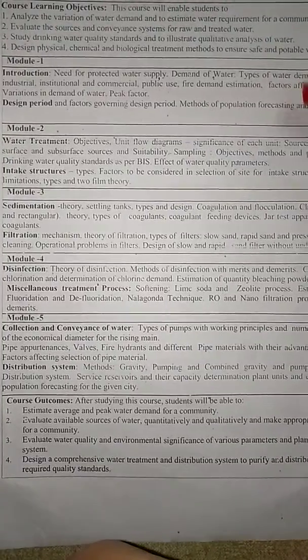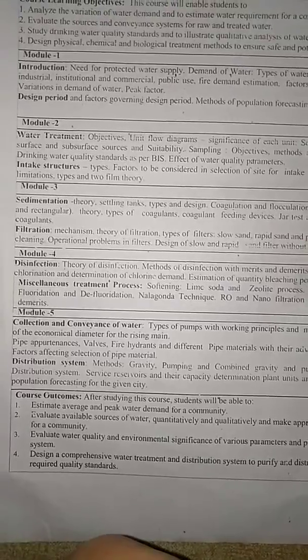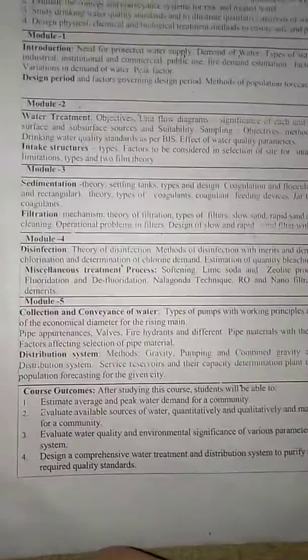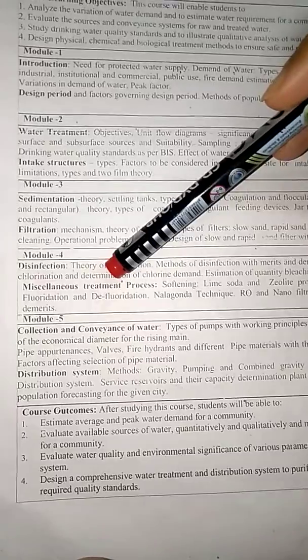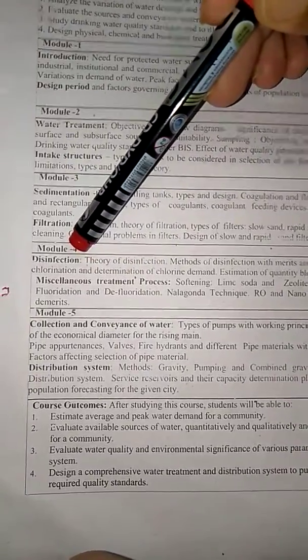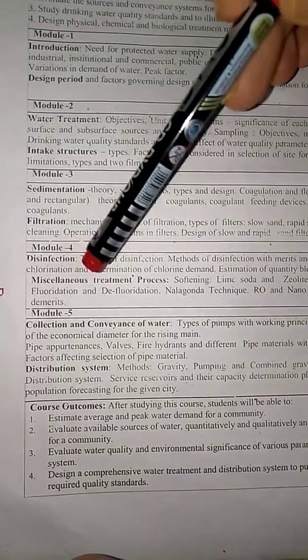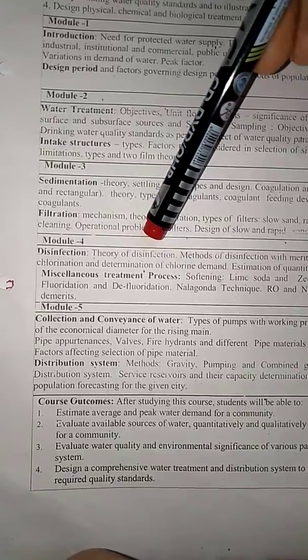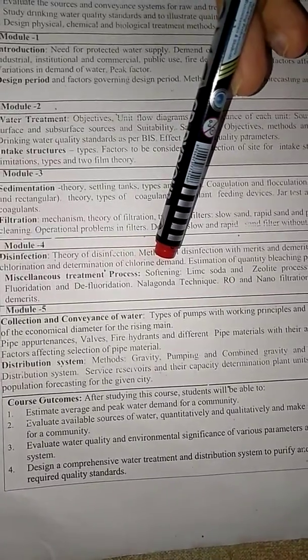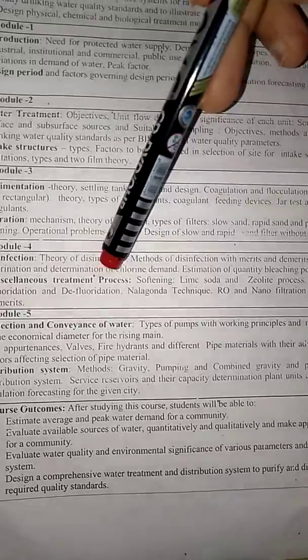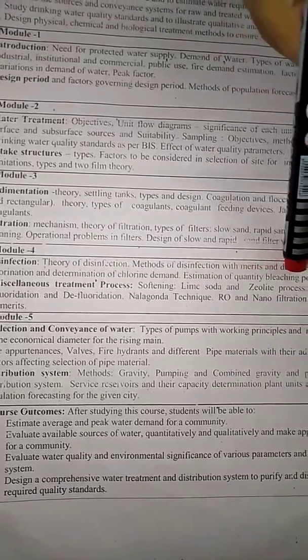We have completed Module 1 and Module 3. Today we are going to discuss Module 4. In Module 4, we will be discussing disinfection and miscellaneous treatment processes. Under disinfection, we will study the theory behind disinfection, different methods of disinfection with merits and demerits, chlorination, breakpoint chlorination, and determination of chlorine demand. We will also solve some problems on chlorine demand.